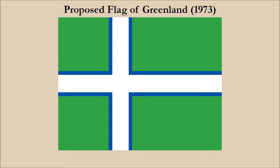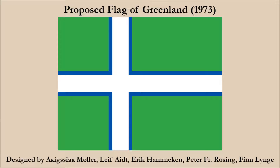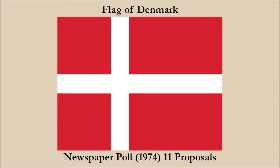In 1973, a group of people from Greenland came up with a proposal. The design is a white Nordic cross with blue fimbriations set on a green field. We don't know the symbolism, but presumably the green field alludes to the country's name, and perhaps the white symbolizes snow and ice, and the blue symbolizes the North Atlantic Ocean. A year after this, a Greenlandic newspaper published 11 proposed flags and polled readers, and the result was that the majority preferred the Danish flag to all of the proposals.